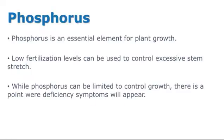The focus of this video is phosphorus. Phosphorus is an essential element for plant growth. Low fertilization levels can be used to control excessive stem stretch. While phosphorus can be limited to control growth, there's a point where deficiency symptoms will appear. That is the focus of this video.